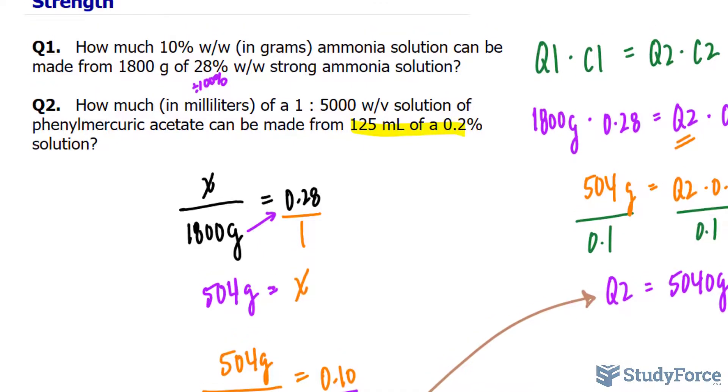And I'll substitute those values into Q1 and C1. And this part right here, in the previous question, it was written as a percentage, 10%, and it was weight per weight. Over here, it's weight per volume. That doesn't change how we solve this.